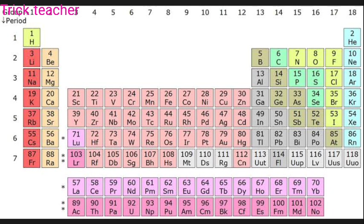The D-block starts from Scandium, element 21, and goes to Mercury, Hg, element 80. These are the D-block elements. There are 2 rows: 5F and 6F — Lanthanoids and Actinoids — placed at the bottom.